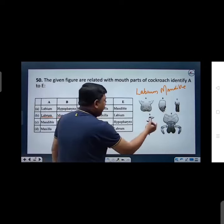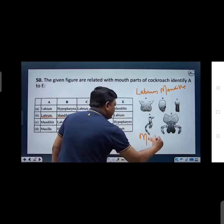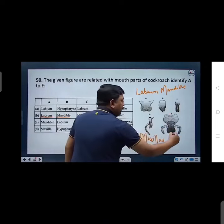And then D, what is this? Maxilla. This is maxilla. This is the diagram. And this is the lower lip, labium. Labium.